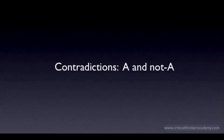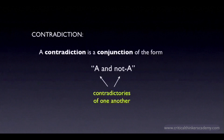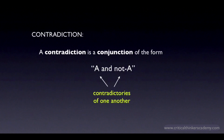The concept of a contradiction is very important in logic. In this video, we'll look at the standard logical definition of a contradiction. A contradiction is a conjunction of the form 'A and not A,' where not A is the contradictory of A. So this is a compound claim where you're simultaneously asserting that a proposition is both true and false.